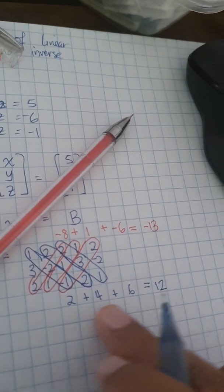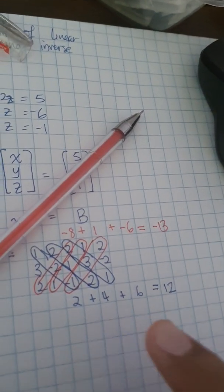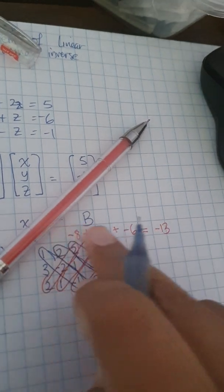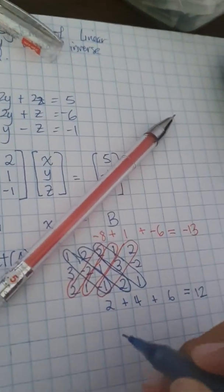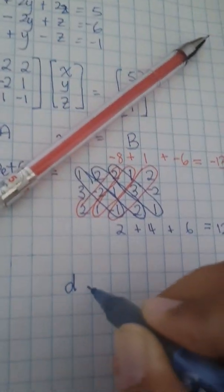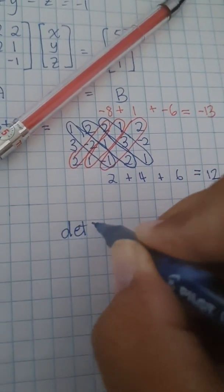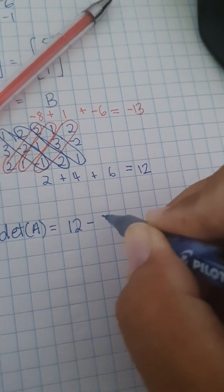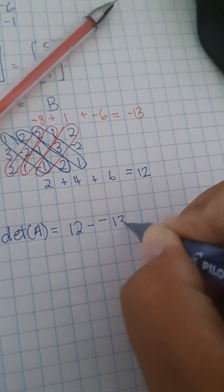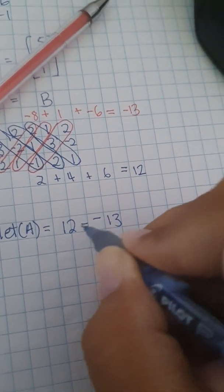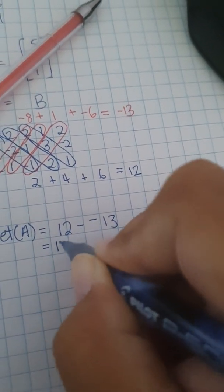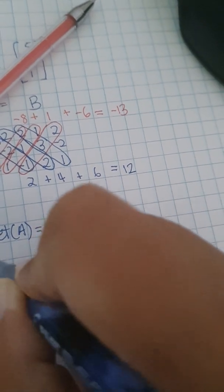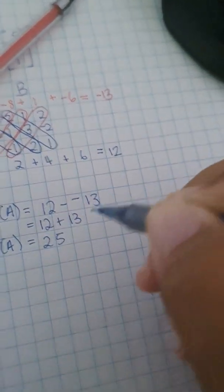So for the determinant shortcuts, it's actually the diagonal, the first diagonal, take away the diagonal at the bottom. So the determinant of A is equals to 12 take away negative 13. 12 take away negative 13 gives you 12 plus 13, gives you 25.